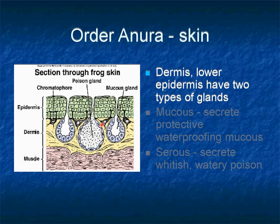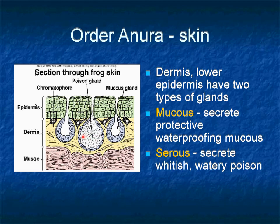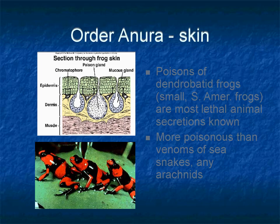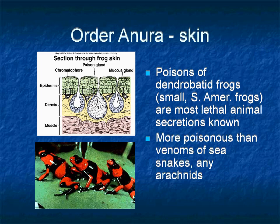Beneath the epidermis and inside the dermis, two types of glands are present. One is the mucus gland, responsible for secreting protective waterproofing mucus. The other is the large granular serous gland, responsible for secreting a whitish watery poison. All amphibians produce skin poison, but effectiveness varies by species. For example, small South American dendrobatid frogs are used by Colombian tribes to poison their blowgun darts, and some dendrobatid members produce the most lethal secretions — more poisonous than venomous sea snakes or the most venomous arachnids.